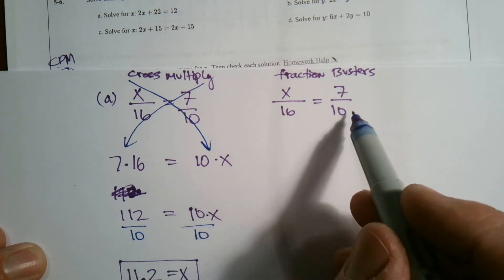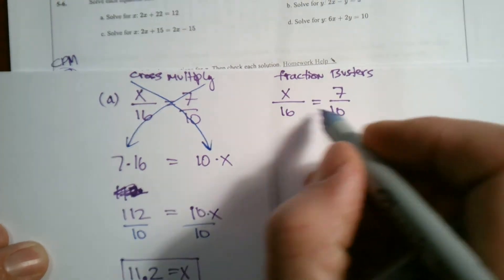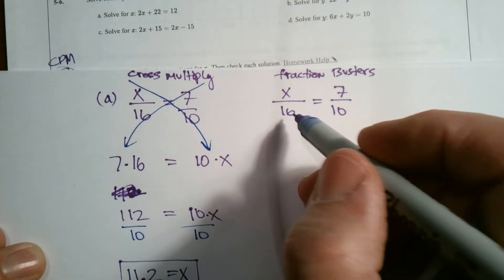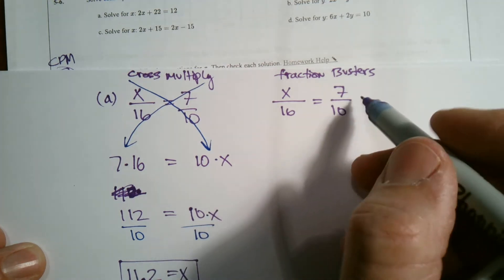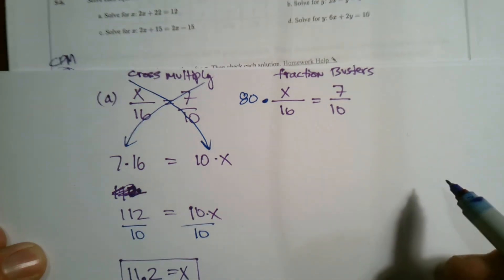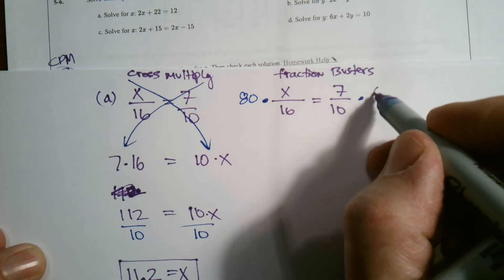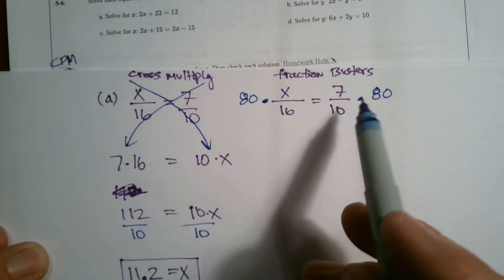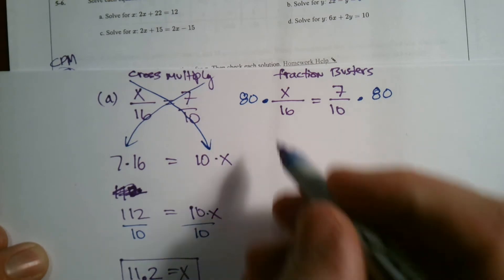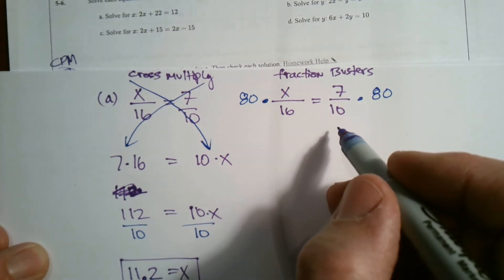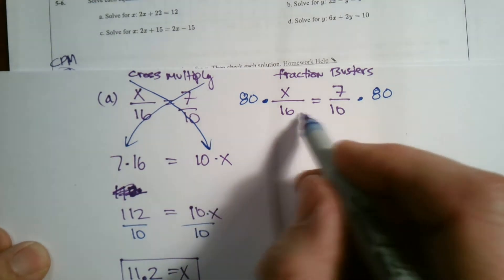What does both 16 and 10 go into? And 80 would work, right? 16 goes into 80 five times, and then 10 goes into 80 eight times. So I can multiply basically both sides by that common denominator. That's a fraction buster. So I multiply by 80 on both sides. Why did I choose 80 again? Because 16 goes into 80, 10 goes into 80. It's one of the least common multiples of 16 and 80.